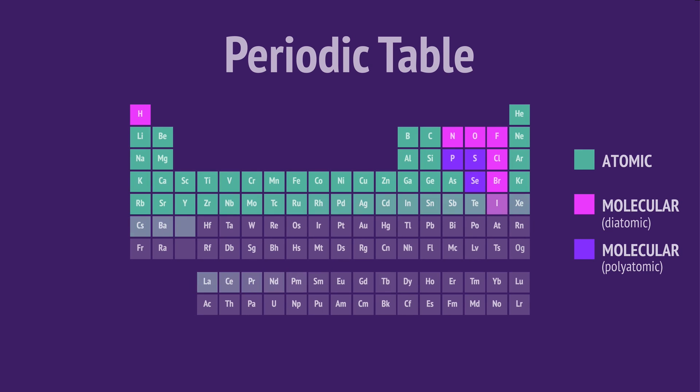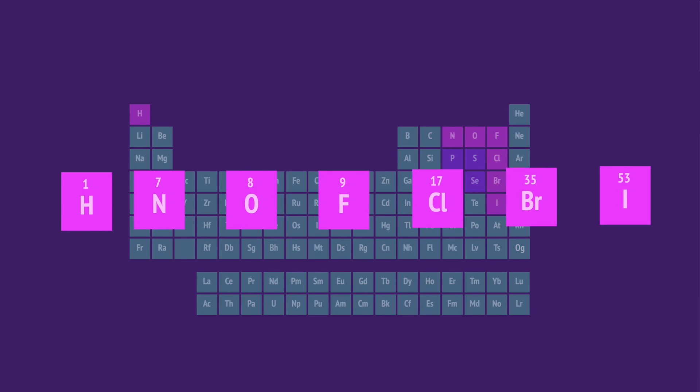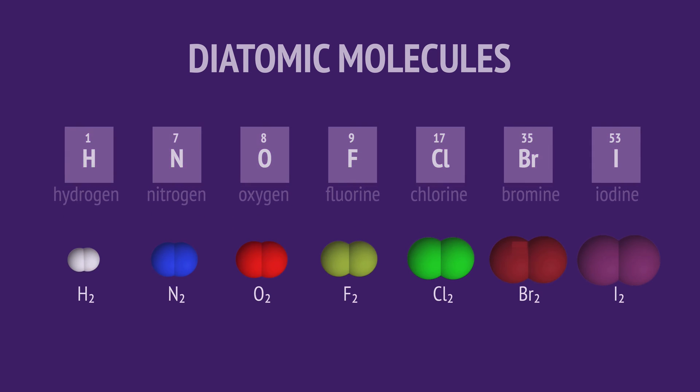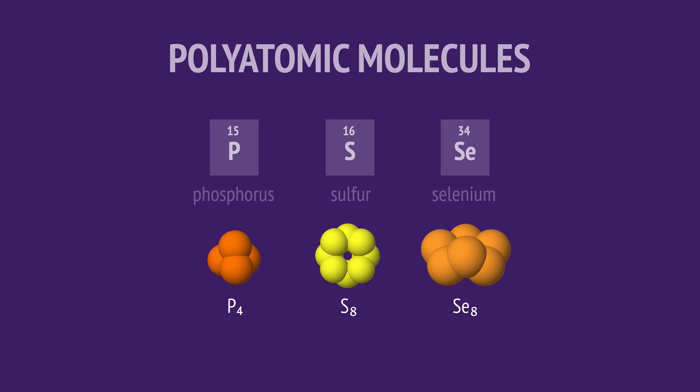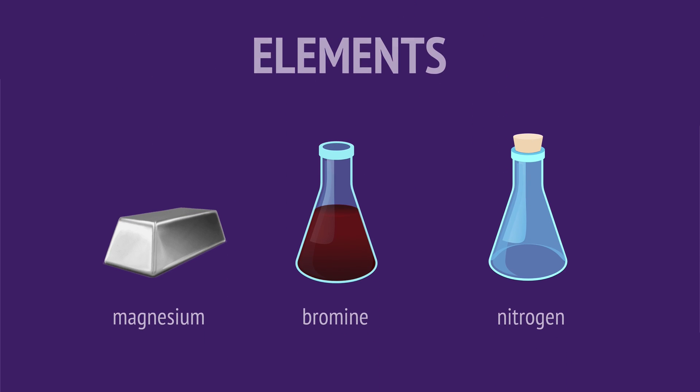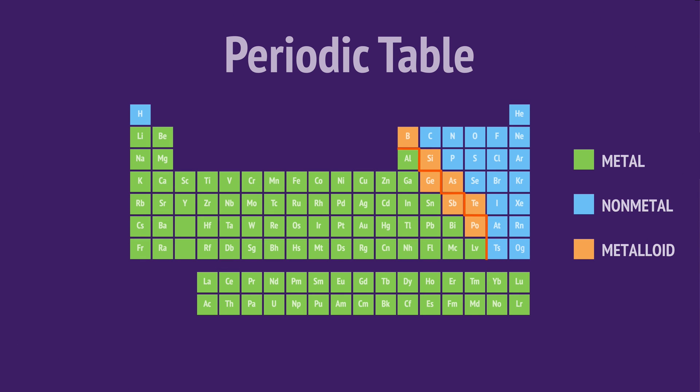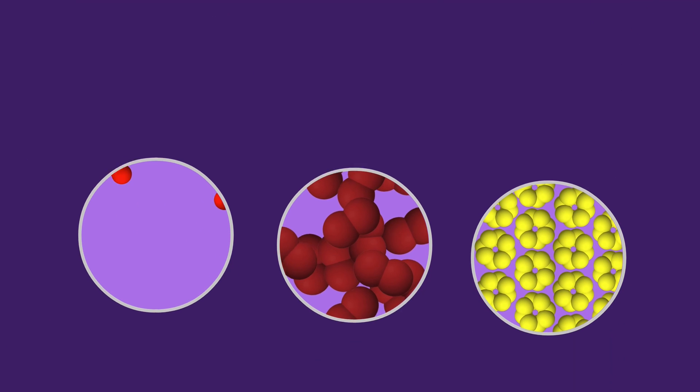Most elements are atomic, with only 10 being molecular. These seven exist as diatomic molecules, having two atoms in the molecule, and these three exist as polyatomic molecules. So in this video, we've looked at the difference between the terms atoms and elements, explored how elements are classified as either metals, nonmetals, or metalloids, and also classified the elements as either atomic or molecular.